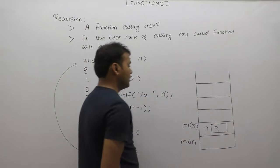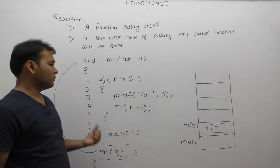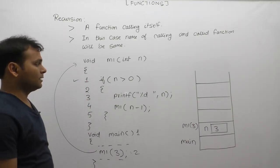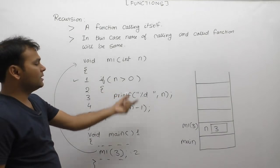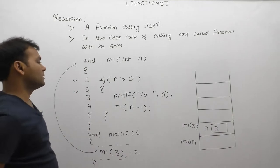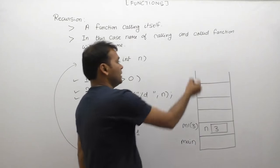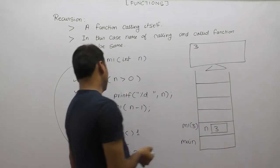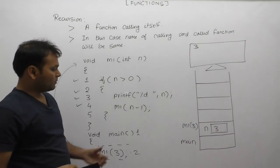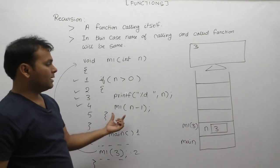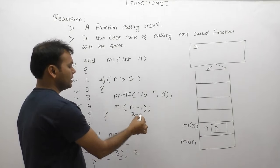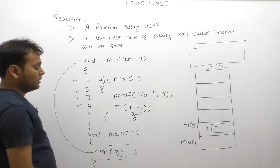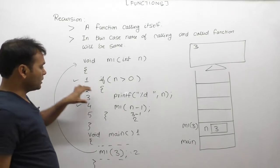The value passed to n is 3. Whenever m1 is called, we need to process all 5 statements. The first statement is the if condition - testing with n equal to 3: is 3 greater than 0? Condition is true. Then the third statement executes: print tab displays the value of n, which is currently 3. Next, the fourth statement calls m1 again with n minus 1.